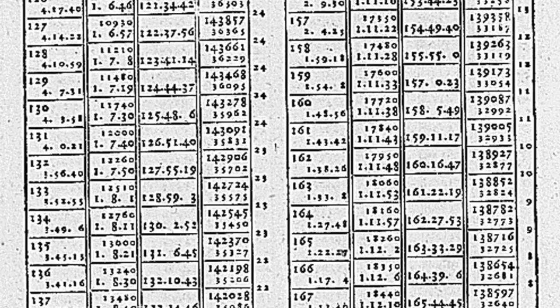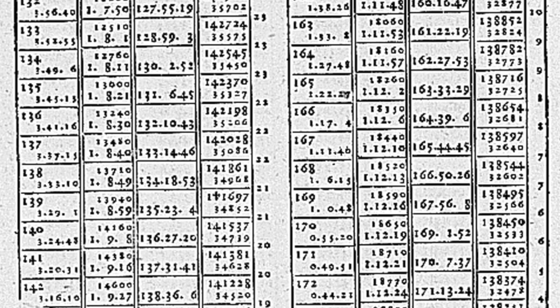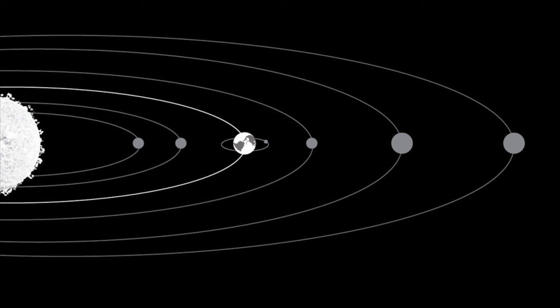He then went on to produce the Rudolphine tables. These included calculations using logarithms and provided perpetual tables to calculate planetary motions and positions at any time in the past or the future. Kepler used these tables to predict the transits of Mercury and Venus across the sun, but he did not live long enough to witness these events.